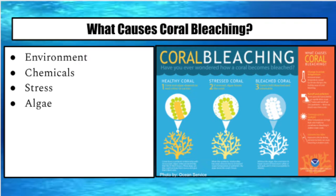Coral bleaching is one of the many negative effects caused by climate change. Corals are very sensitive, and even just a two-degree change in temperature can cause the bleaching of a coral reef. Some other causes include a change in light or nutrients. When a coral bleaches, it is expelling a symbiotic algae called zooxanthellae. The zooxanthellae are the coral's food source and the cause of their bright colors. When stressed, corals begin expelling the algae, dulling their color until the coral looks completely white, loses its food source, and becomes susceptible to disease.